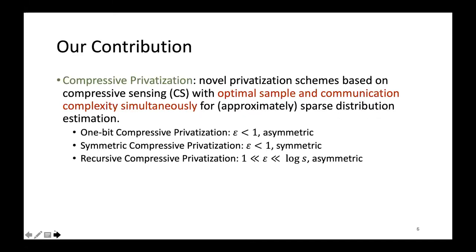To solve this problem, we propose a series of privatization schemes called compressive privatization based on compressive sensing. These schemes achieve optimal sample and communication complexity simultaneously for both sparse and approximately sparse distributions. More specifically, we propose three privatization schemes for different parameter settings. For high privacy regime, where epsilon is less than one, we designed both asymmetric and symmetric schemes, and we also extend our method to medium privacy regime, where epsilon lies between one and log s, by model-based compressive sensing.